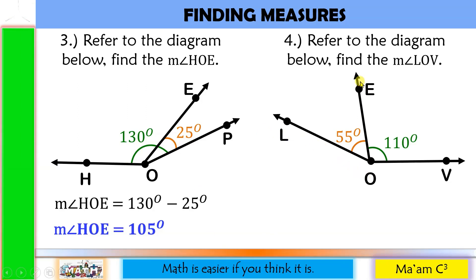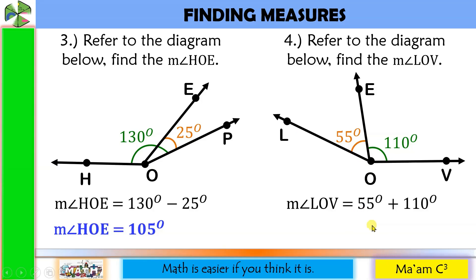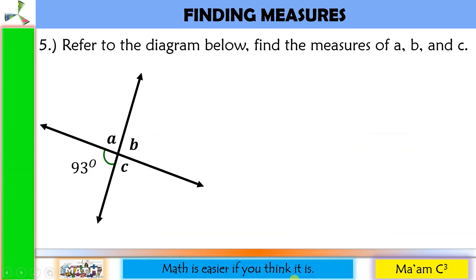Next one: Angle LOE and angle EOV are adjacent angles — they share a common ray and a common vertex. To solve for angle LOV, we just add the measures of these two angles. 55 plus 110 gives us 165. So angle LOV measures 165 degrees.